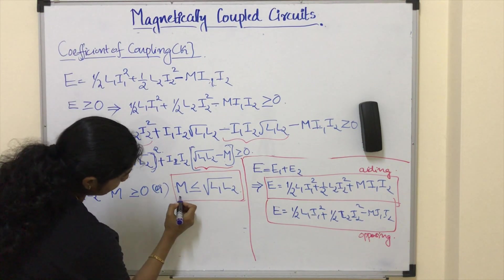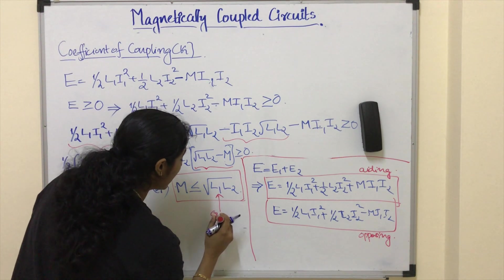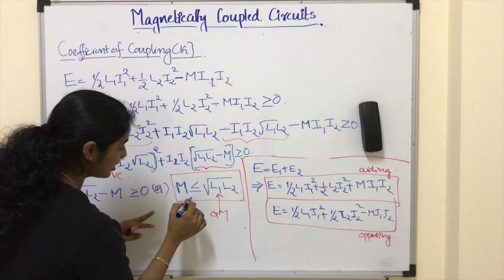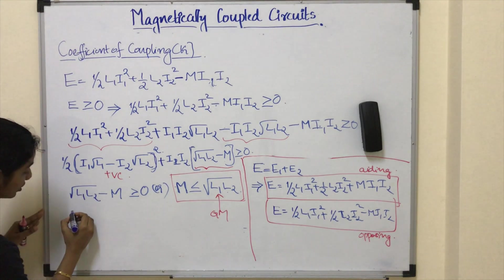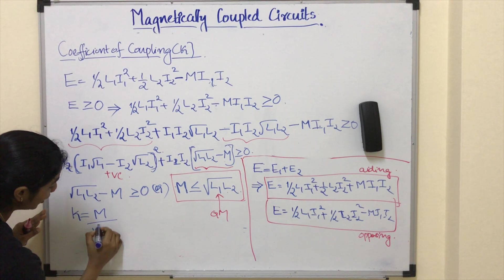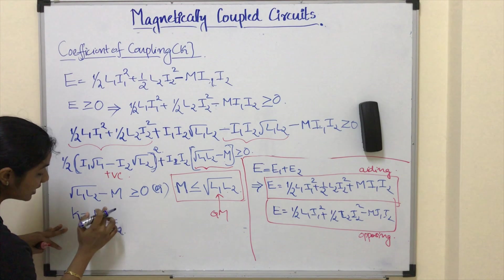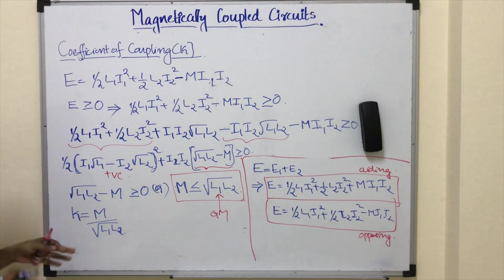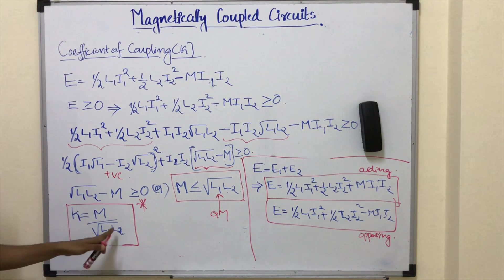That is, mutual inductance M cannot be greater than the geometrical mean of the self-inductances of the two coils L1 and L2. The extent to which mutual inductance M approaches its upper limit is specified by the coefficient of coupling K, which is defined as K equals M divided by the square root of L1 times L2.